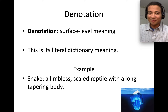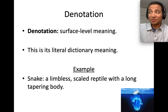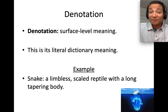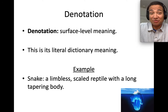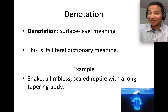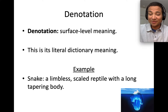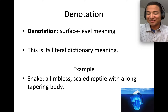Denotation is simply the surface-level meaning of something — just what we see at the surface without any further digging for anything deeper, any golden nuggets. When thinking about a word, its denotation would be its literal dictionary meaning. For example, here we have the word 'snake.' The dictionary meaning — its denotation, its surface-level meaning — is just 'a limbless scaled reptile with a long tapering body.' But as you can see from this iceberg picture, that's just the tip.